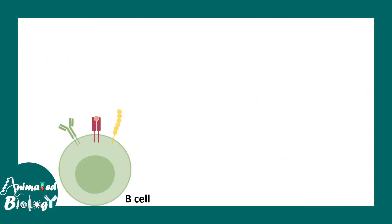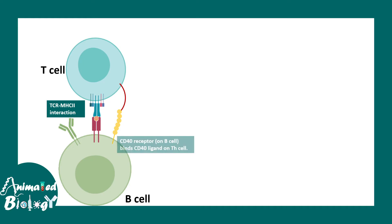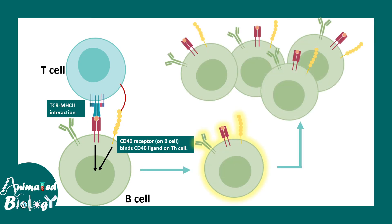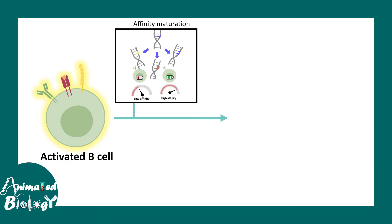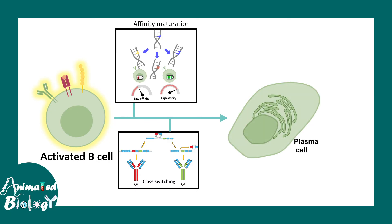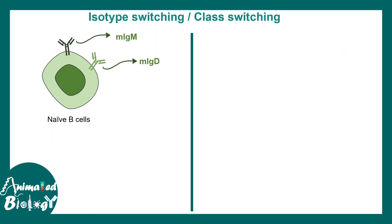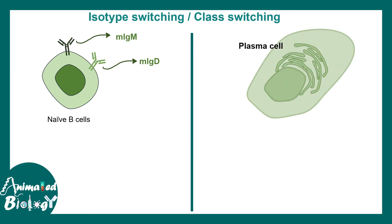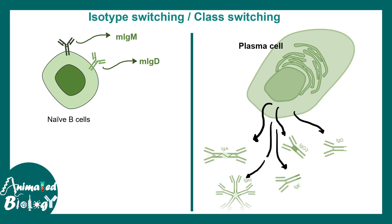Regarding IL-4 and cytokines that trigger class switching, we need to understand B cell activation. B cell activation is triggered by T helper cells — two distinct interactions provide signals that activate B cells and allow rapid proliferation. This activated B cell undergoes affinity maturation and class switching to give rise to a specific isotype-producing plasma cell. A naive B cell has IgM and IgD receptors, but a distinct plasma cell secretes one particular antibody type.